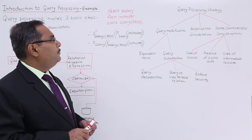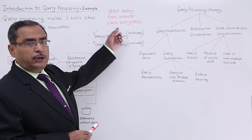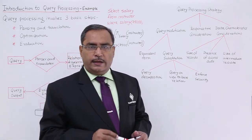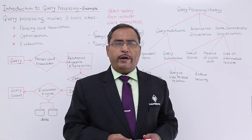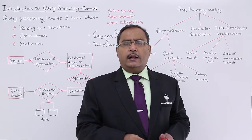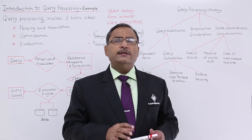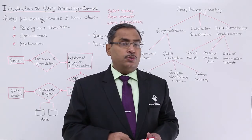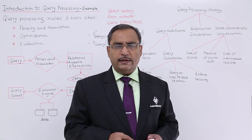The statement is written as: SELECT salary FROM instructor WHERE salary < 75,000. This query is executed on a table named instructor, which has multiple different attributes — let us suppose 40 different attributes. But this query will fetch only data from the salary column, for those salaries which are less than 75,000. Suppose this instructor table has 5,000 records or tuples, and only 400 tuples have a salary value less than 75,000.